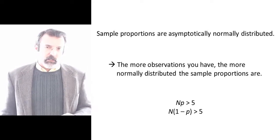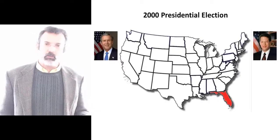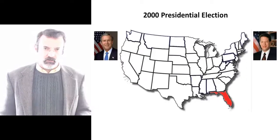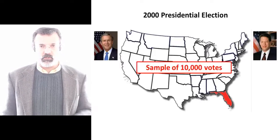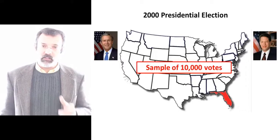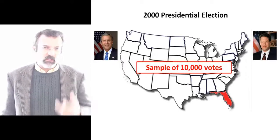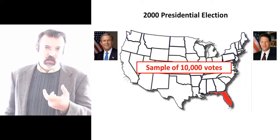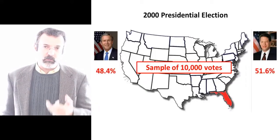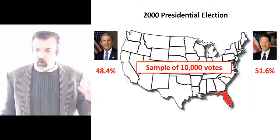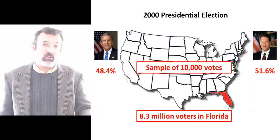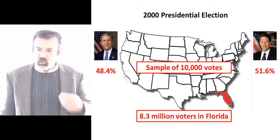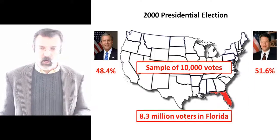Let's look at a historical example. In the 2000 presidential election, George W. Bush was running against Al Gore in the state of Florida. As the election drew to a close, pollsters, based on a sample of about 10,000 votes, concluded that Al Gore would likely win Florida. They found that 51.6% of the sampled votes went to Al Gore. You might say there's no way to tell who would win, since we're only looking at 10,000 votes out of 8.3 million registered voters in Florida. We can use this sample to construct a confidence interval.